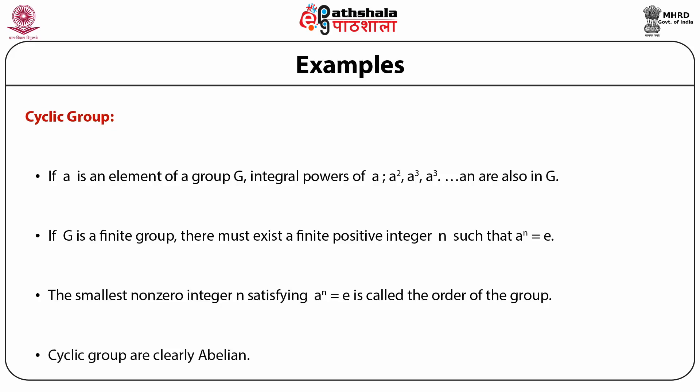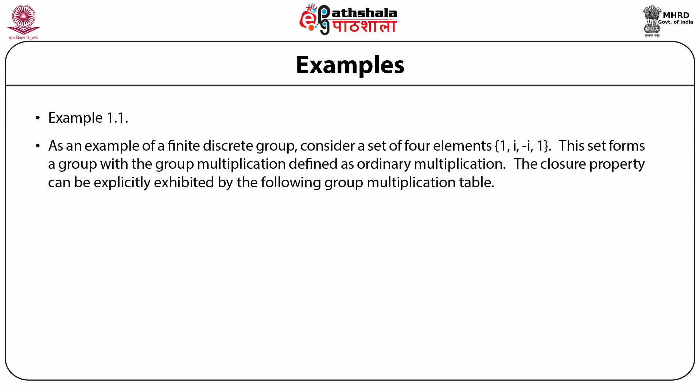Cyclic groups are clearly abelian, because a²·a³ = a³·a². An example of a finite discrete cyclic group is the set of four elements which are the fourth roots of unity: 1, i, −i, −1. This set forms a group with the group multiplication defined as ordinary multiplication.